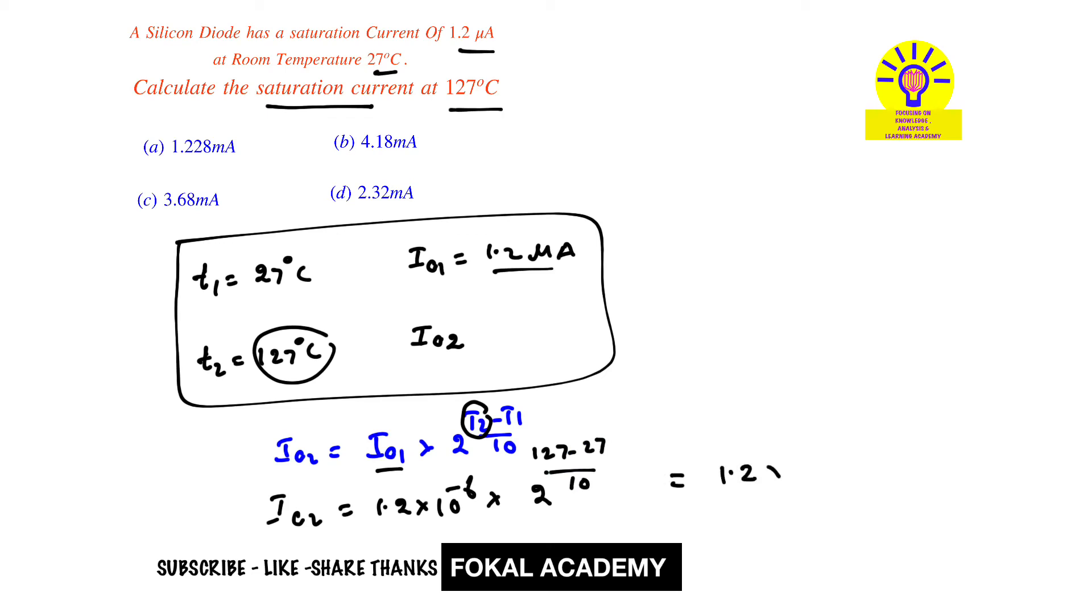By simplifying this using calculator, we get Io2 equal to 1.228 milli amperes, the saturation current at temperature 127 degrees centigrade. From the options, option A is the correct option.